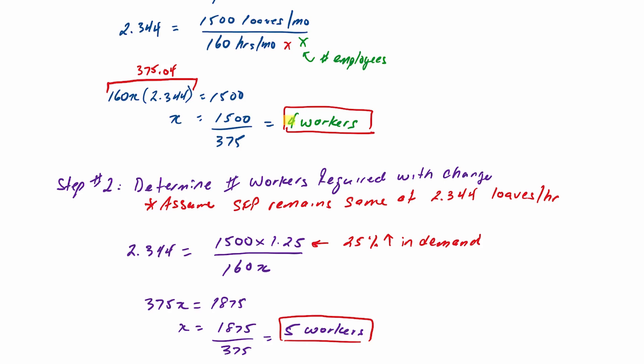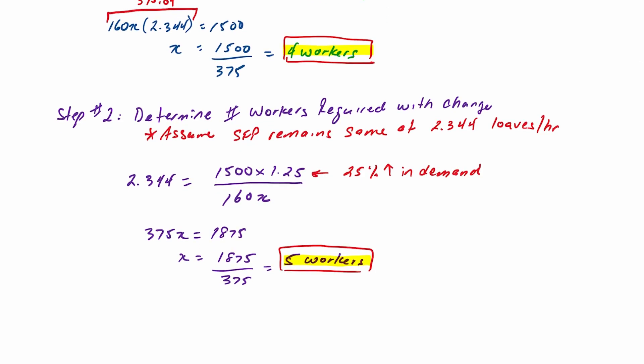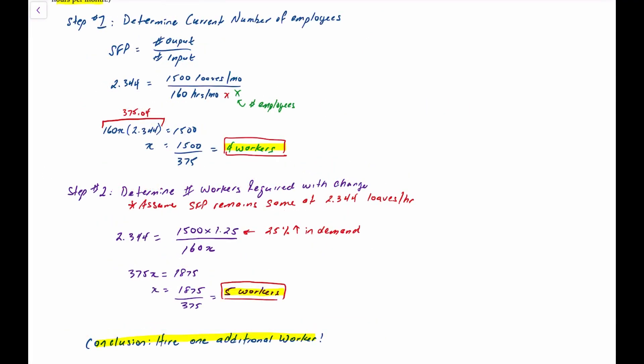Currently there are 4 workers. If they go ahead with the modification to how the ovens are loaded, they will need a total of 5 workers, so the company will need one more worker. To summarize: we determined the current number of employees needed to produce 1500 loaves per month, and then based on the recommended change to how the ovens are loaded — increasing production from 1500 to 1875 loaves — the company needs one additional worker.